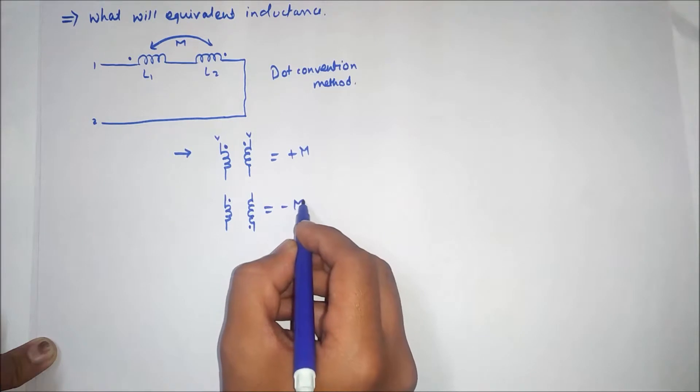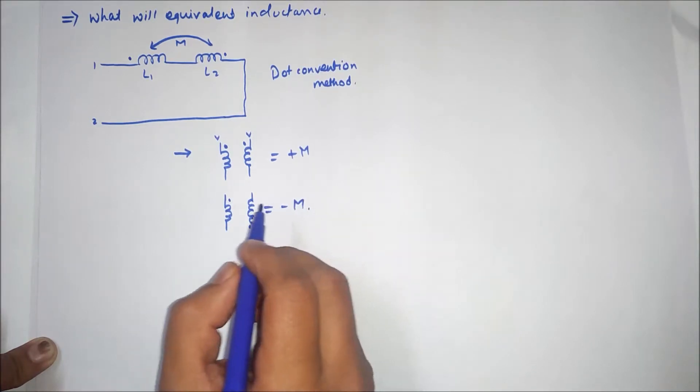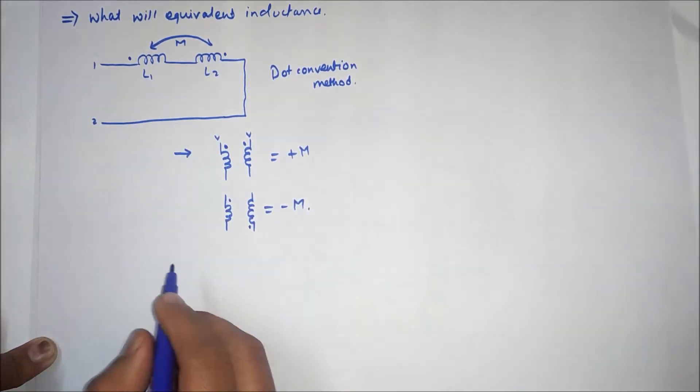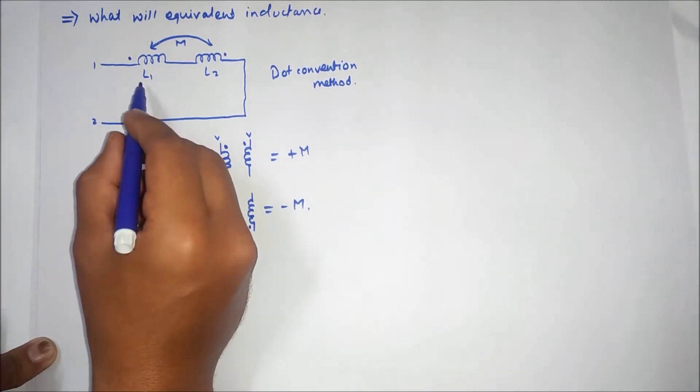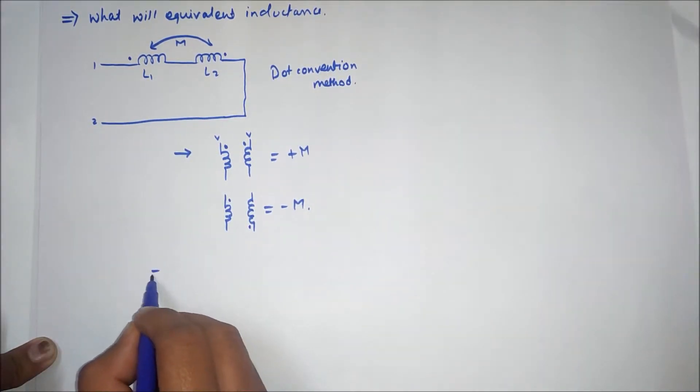So in this circuit, first we will write total inductance. Total inductance will be L1 plus L2. Now we will see the mutual inductance M.